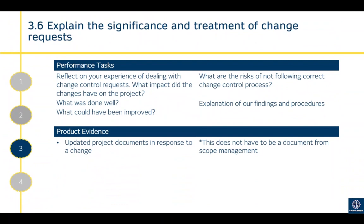Criterion 3.6 is to explain the significance and treatment of change requests. 'Explain' makes this criteria come across as a question, but best practice is not to have it as a separate question — you want to tie this into your holistic statement where you're dealing with a change control request. If you've missed it, it can be done as an individual piece of work, but it still shouldn't be theoretical — it should be tied in with your workplace examples of what you've actually done as part of your project.